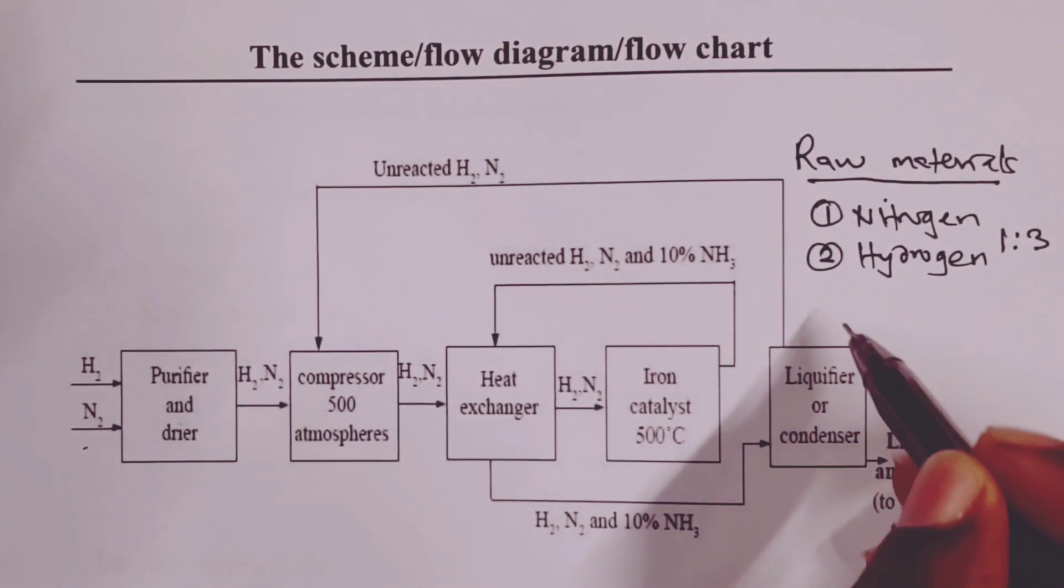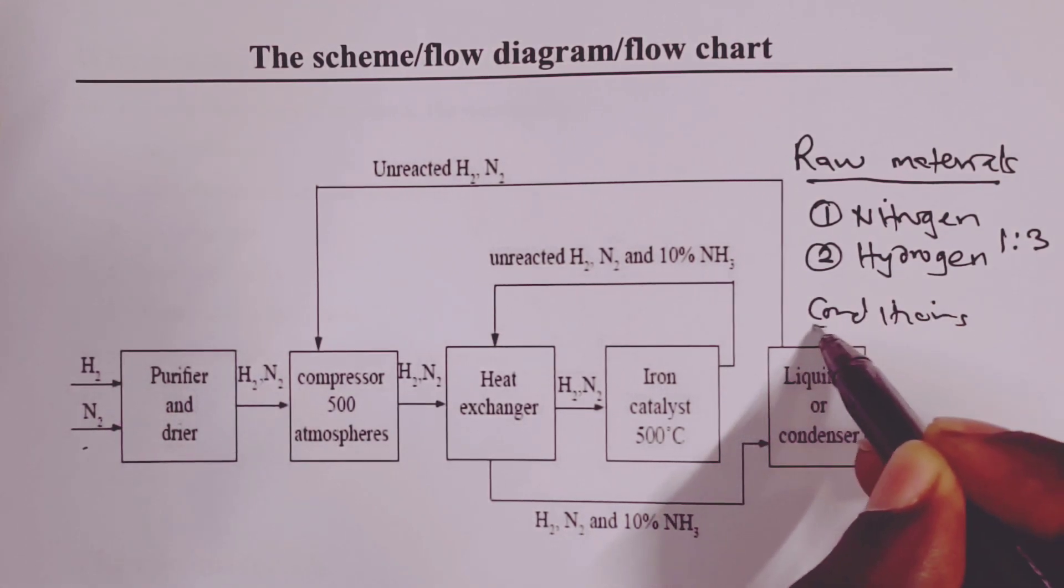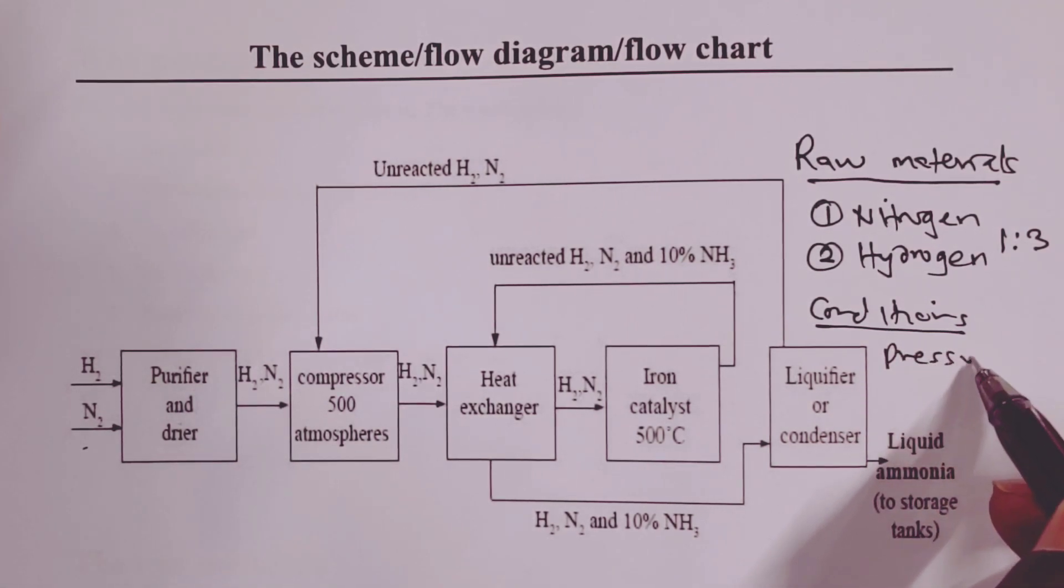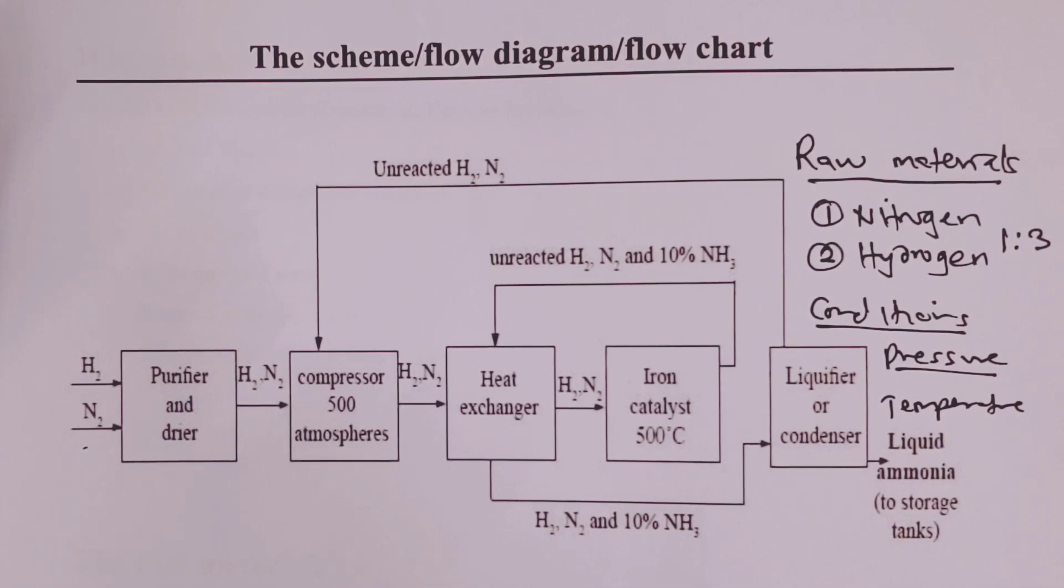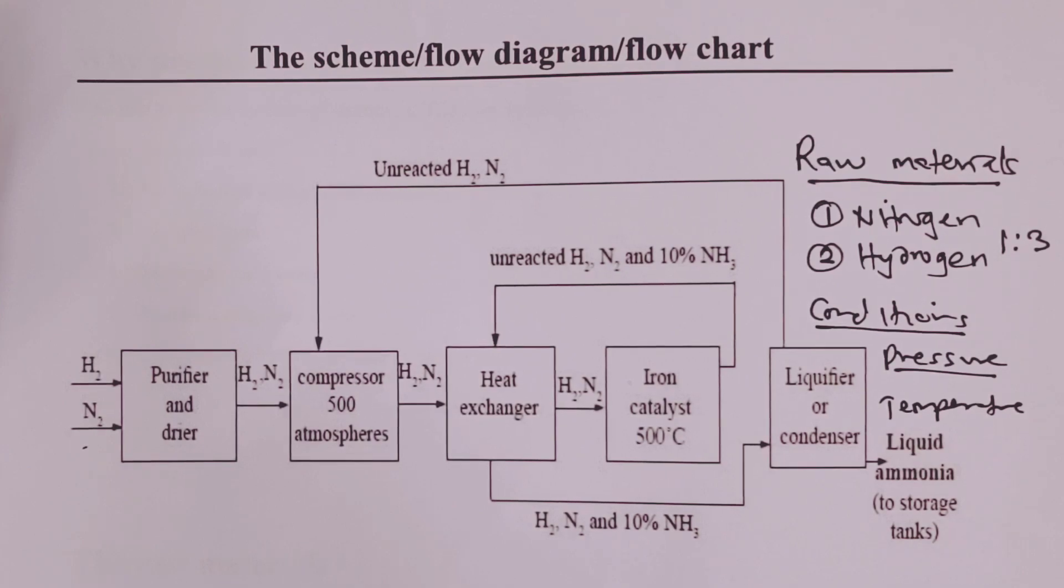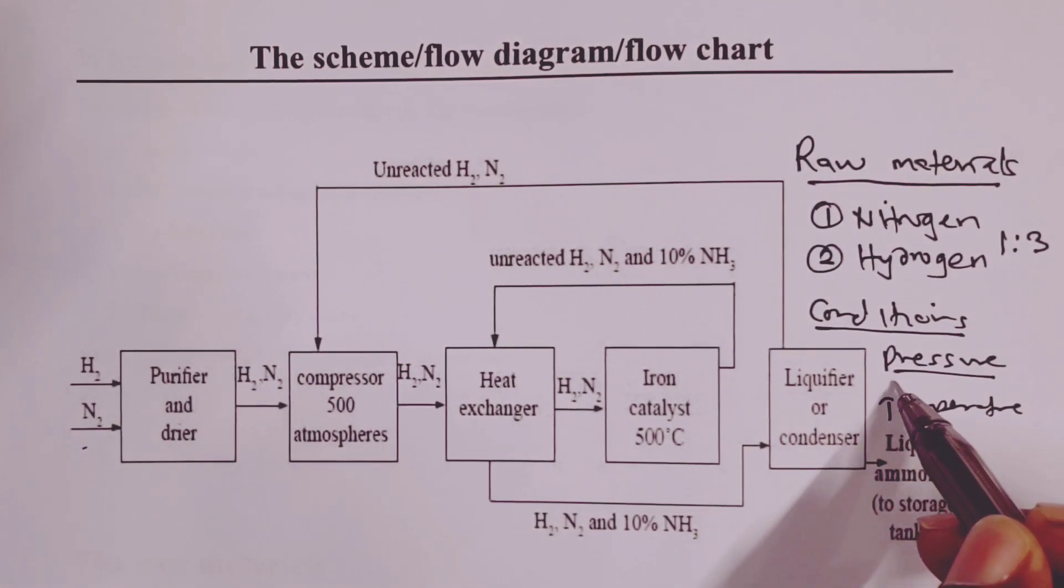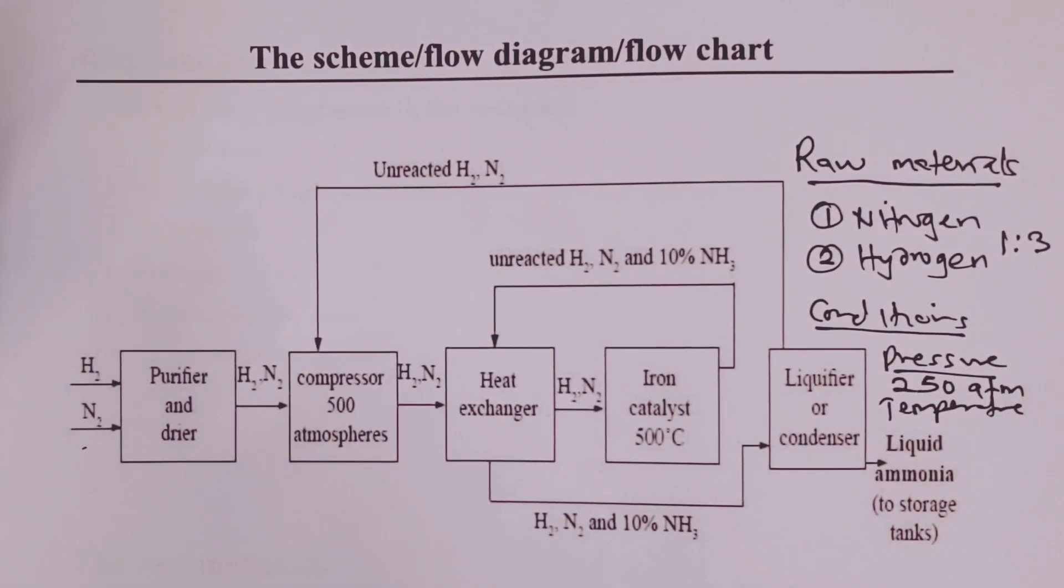Let us now move on to conditions that are applied in this process. And when we talk about conditions we mention pressure and we mention temperature. Allow me to begin with pressure. When it comes to pressure, several industries use different values depending on the cost that they intend to incur. So we are talking about pressure of between 200 to 500 atmospheres. But most of these processing plants usually apply a pressure of 250 atmospheres. So that is what we shall have in our notes. Though as I have explained, the pressures applied by different factories range between 200 and 500. So we shall go for 250.